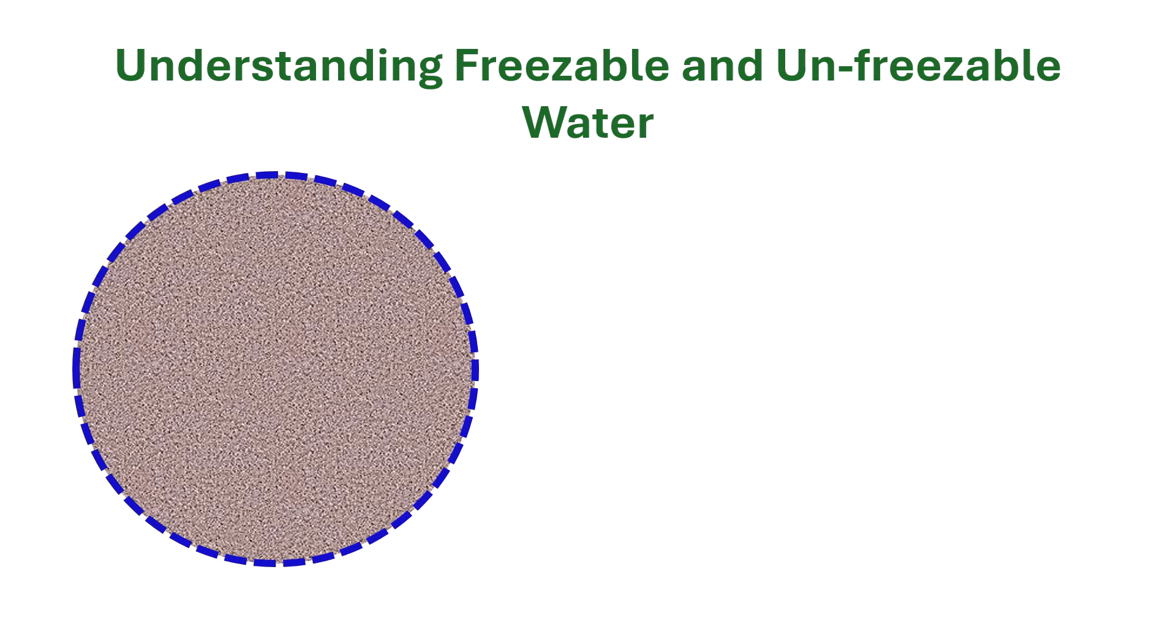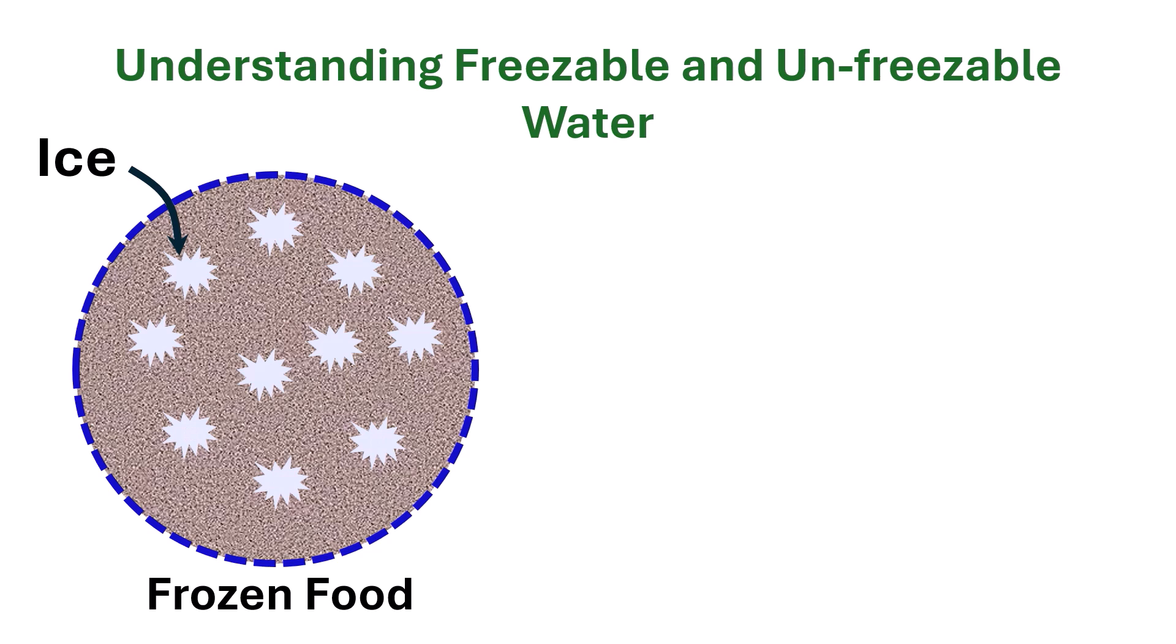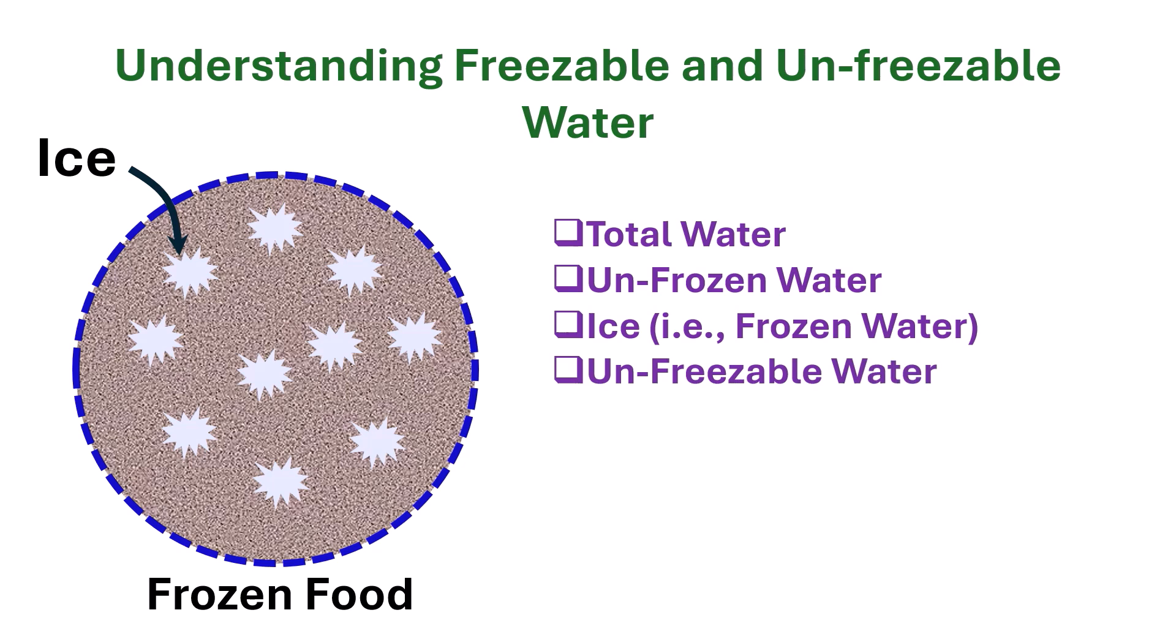In the case of frozen foods, ice is formed and different types of water are usually defined as total water, unfrozen water, ice that is frozen water, and unfreezable water. It can be written as xw0 equals xwu plus xi plus xw dash. I am going to define clearly these terms at the end of this video.